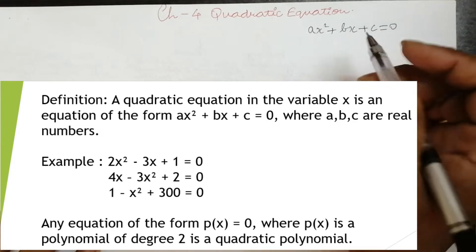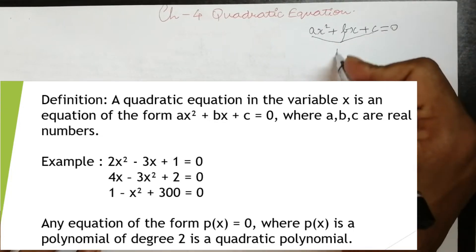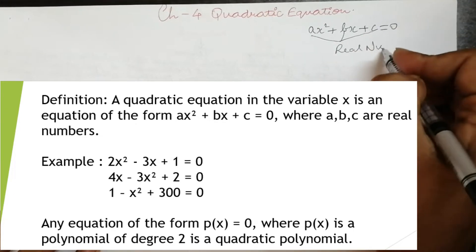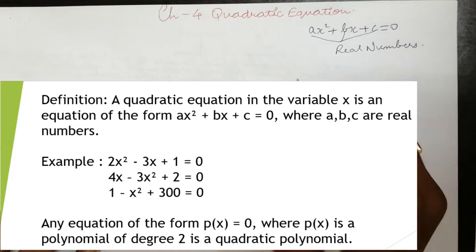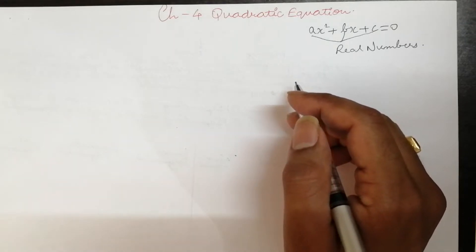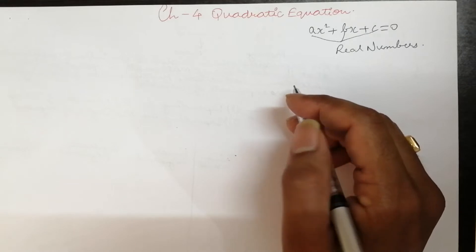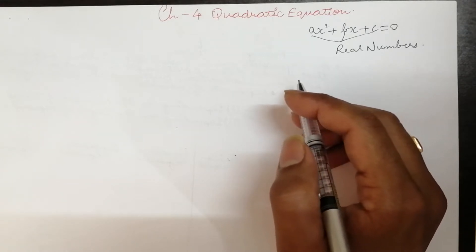Where a, b and c are real numbers. Real numbers was the first topic but we will cover it last because it is quite an easy topic. So we will discuss real numbers at the last. First we will complete the algebra section. I have completed pair of simultaneous linear equations, and now quadratic equations.